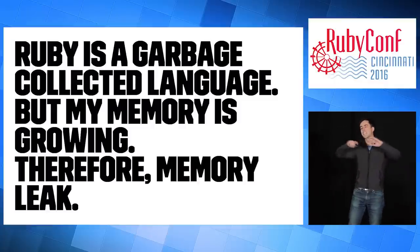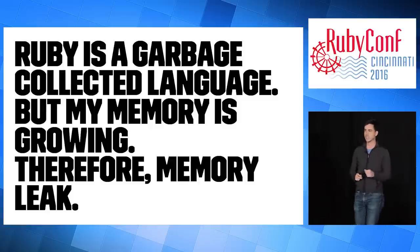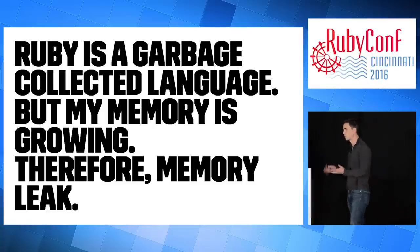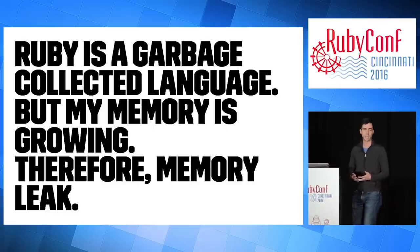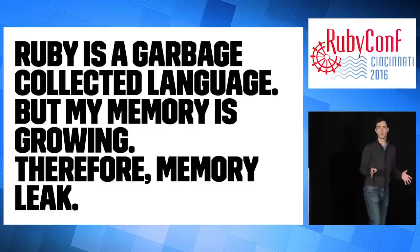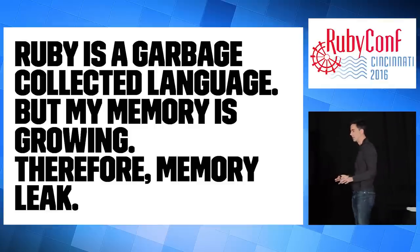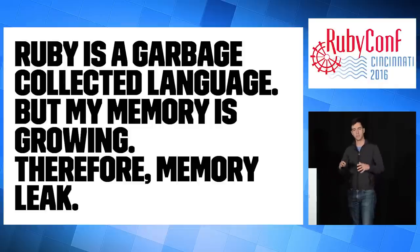Ruby is a garbage-collected language, but my memory is going up — therefore that must be a memory leak. That's just not the case. As Ruby programmers, we're allowed not to think about memory, and that's a good thing. Thank God we don't have to call malloc and free on our own, otherwise we'd all be C programmers. It's okay and expected that as Ruby programmers we don't really understand what's happening at the memory level.